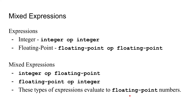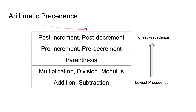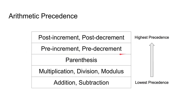Lastly, there is operator precedence with this arithmetic. It works just like math, but with the increment and decrement operators added. Post-increment and post-decrement are at the top of the precedence ladder, then come pre-increment and pre-decrement, and then it's PEMDAS: parentheses, multiplication, division, modulus, and then addition and subtraction. And that is what you need to know about arithmetic. Thank you for watching, and see you in the next video.